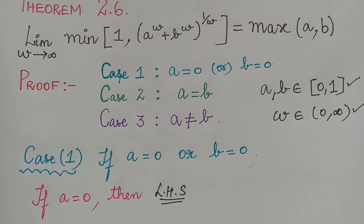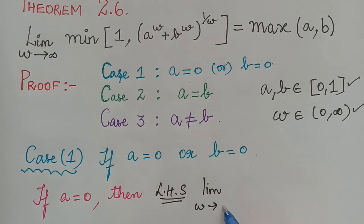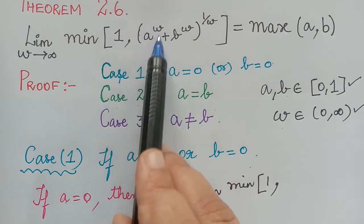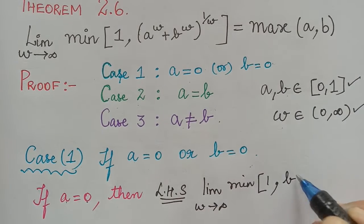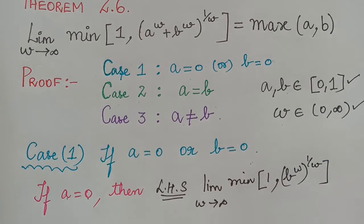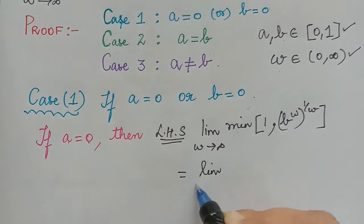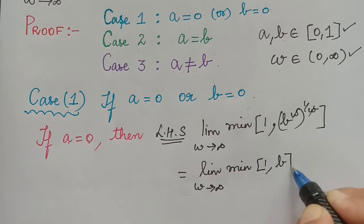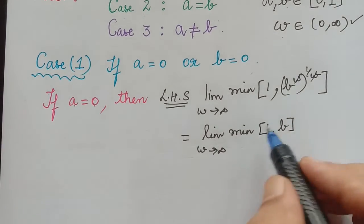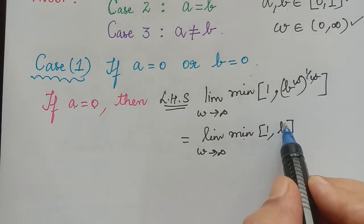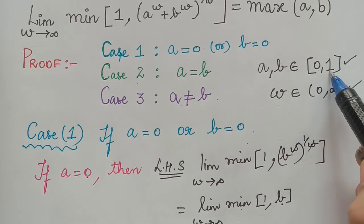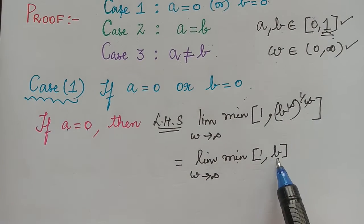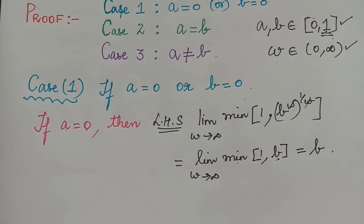The left hand side of the theorem will be limit w tending to infinity of minimum of 1 and — now a is 0, so that term becomes 0 — and we are left with b^w raised to the power 1/w. This equals limit w tending to infinity of minimum of 1 and b. Since b is an element of the closed interval [0,1] and 1 is the maximum value, the minimum of these two values will be b.